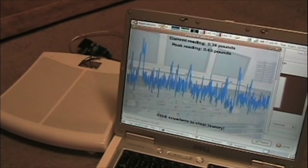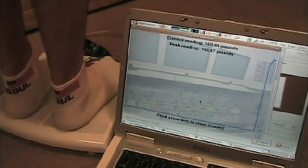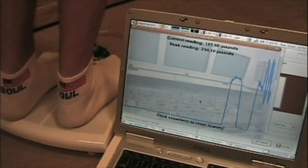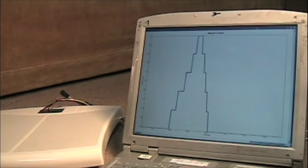The code we wrote takes a stream of values and builds a graph of the weight on the scale over time. We also created a different app that just divides the value in pounds by the weight of one can, so we can see how many cans are on the scale.